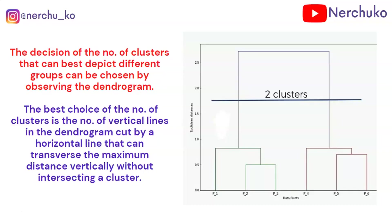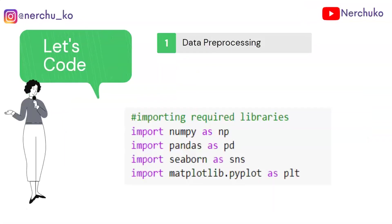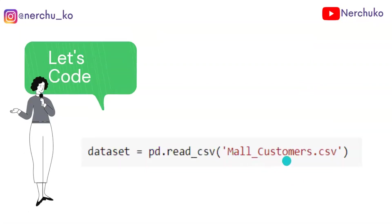Now we are going to do the implementation. First, data preprocessing; second, train the model; third, predict the results; and finally, visualize the results. We will import libraries: NumPy, Pandas, Seaborn, and Matplotlib. Then we load our dataset, mall_customers.csv, using Pandas: dataset = pd.read_csv('mallcustomers.csv').